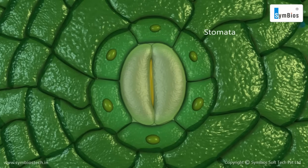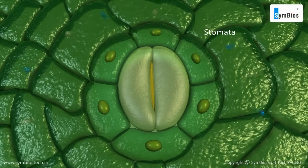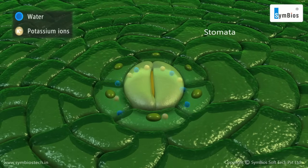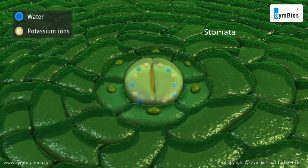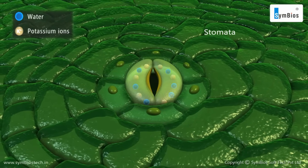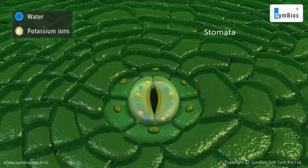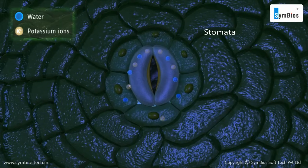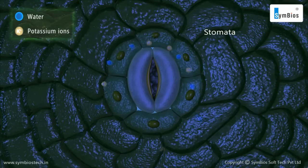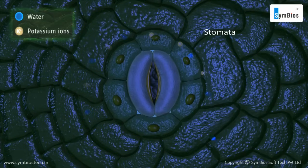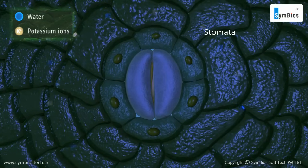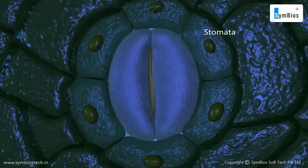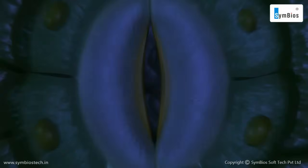This is controlled by the stomatal opening and closing mechanism. During the daytime, water enters into the guard cells along with the potassium ions. This brings about a change in the shape of the guard cells and the stoma opens. During the night, the potassium ions and water molecules leave the guard cells. Thus, the turgidity decreases and the stoma closes. Stomata also act as main sites of gaseous exchange in plants.